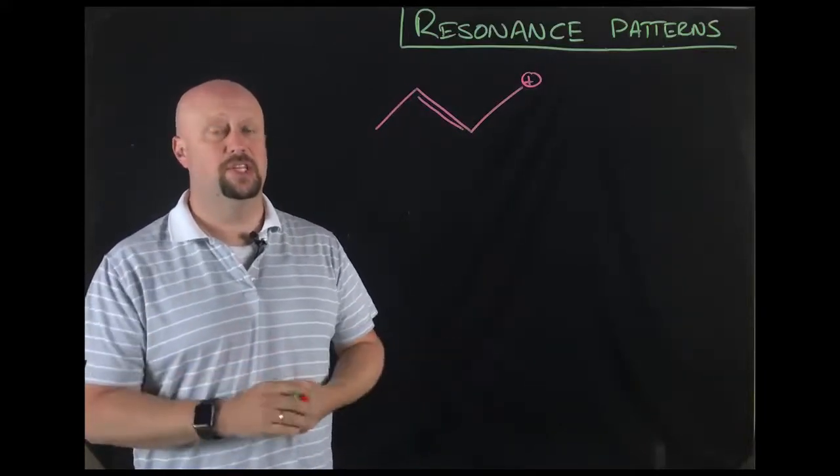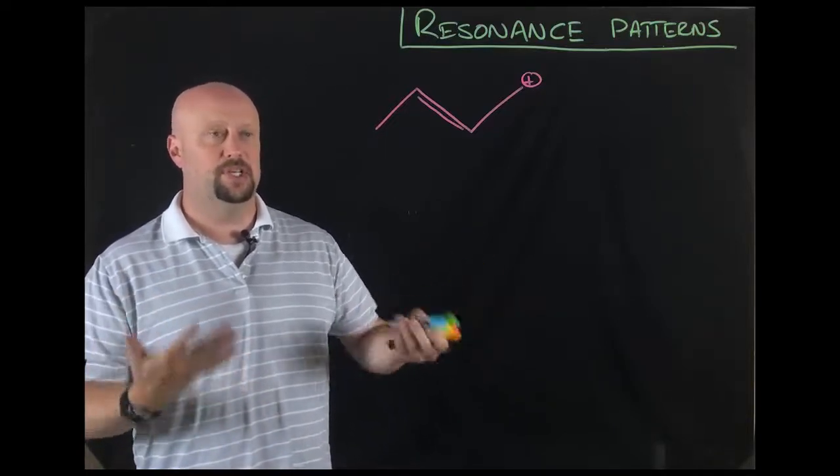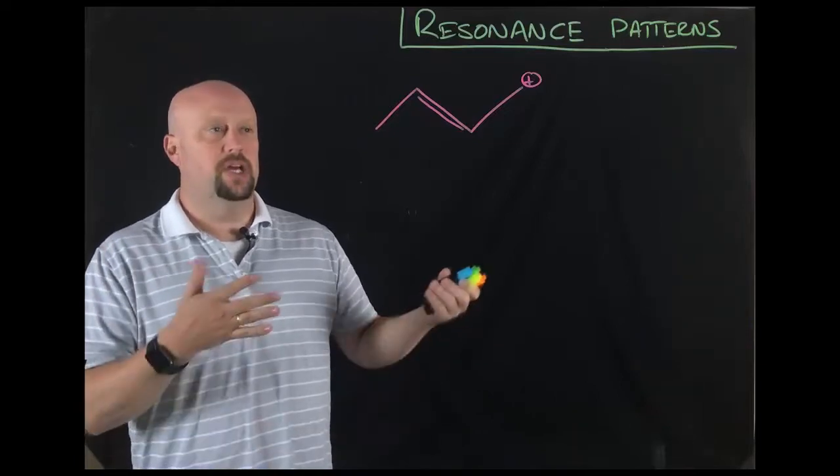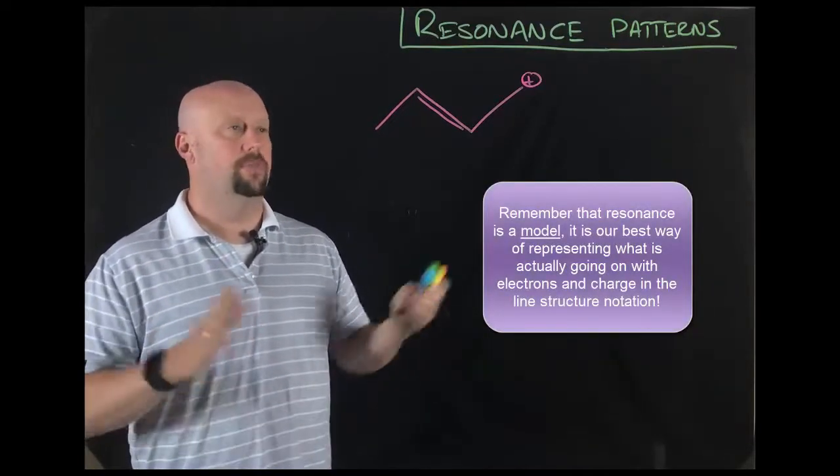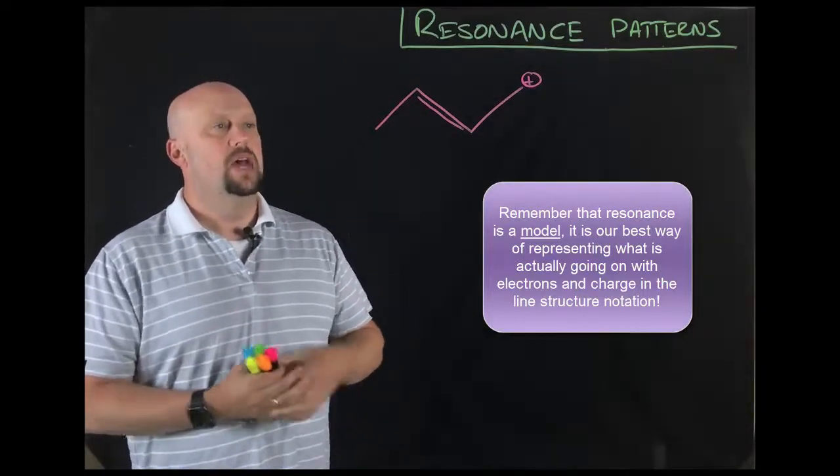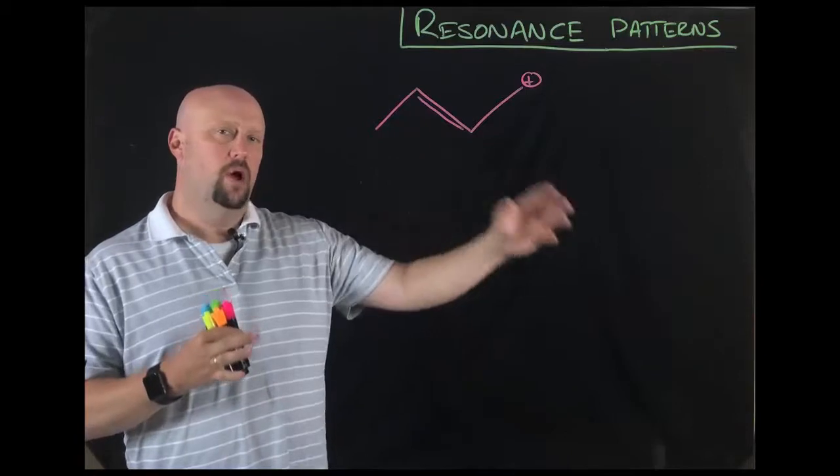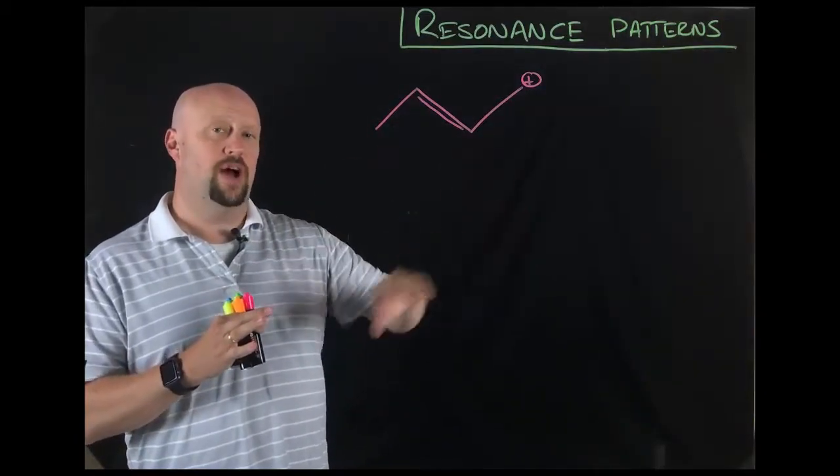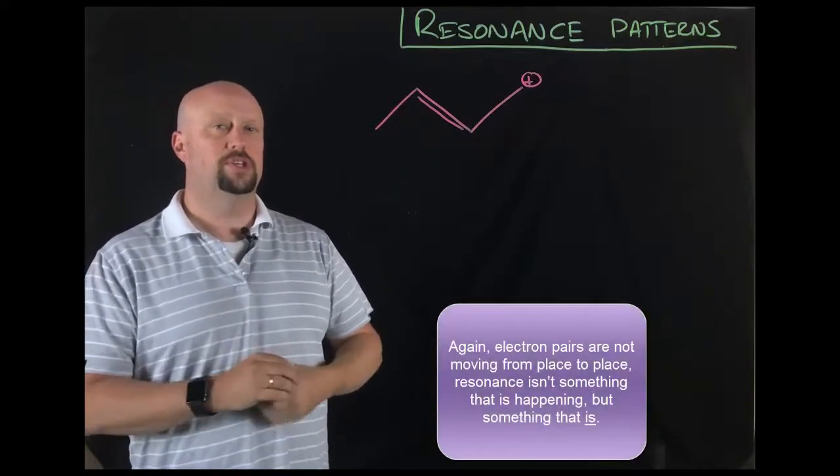Remember that resonance is merely the best way that we can represent structures that are in line structures, the best way that we can represent their actual reality, because line structures are an imperfect model for that. And that's one of those things you need to learn in science anyway, is that we build models for things that are incomplete representations of what they actually are, because they work, and because sometimes you can't make the reality fit easily into a model.